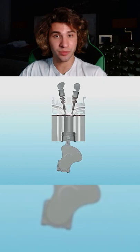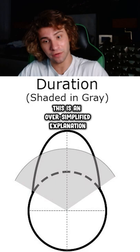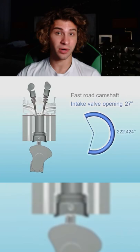Now an aftermarket camshaft manipulates lift and duration, which subsequently manipulates how much air and fuel is being drawn into the combustion chamber. More air obviously equals more horsepower.